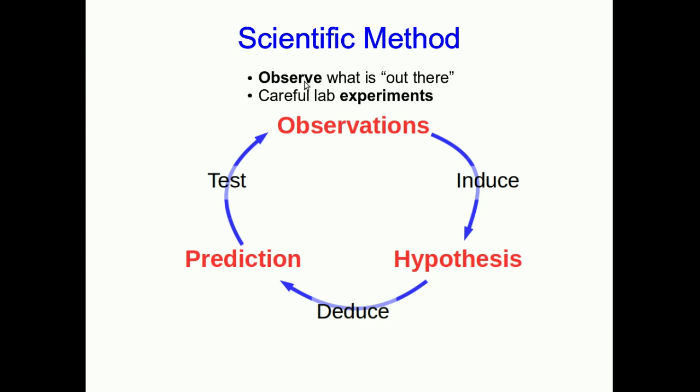Observations could mean many things. They could be that we're going out into nature and seeing what's out there, but it could also be careful lab experiments where we're keeping certain things well controlled and varying other things in a way that we know. A hypothesis unavoidably has underlying assumptions, and then it is a mental model. And you use mental models in your everyday life, whether you're doing science or not.